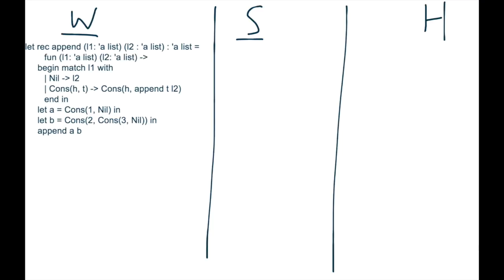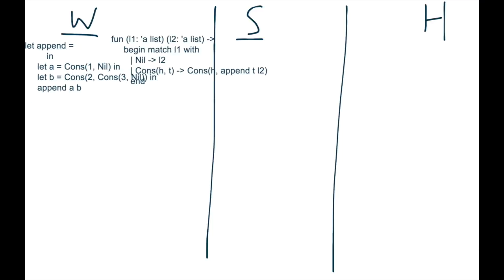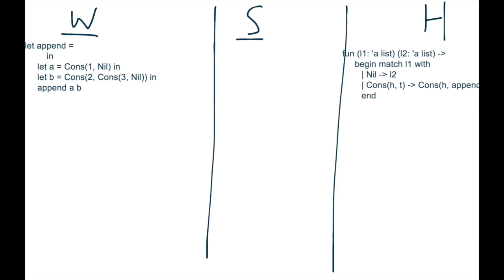We use this anonymous function definition of append. So append is going to be equal to this anonymous function, which takes the same arguments and does the same thing. And this allows us to actually have something that we can point to on the heap. So that's what we're going to do. We're going to copy this entire thing to the heap. Just like this.